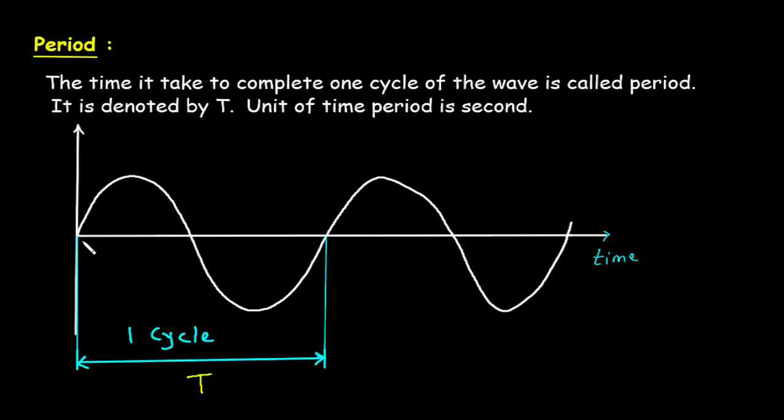How much time it takes to complete one cycle is called the time period. It is denoted by capital T, and the unit of time period is second. These cycles are repeating again and again.